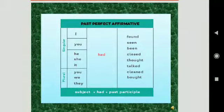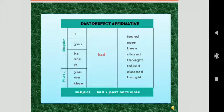How to frame affirmative sentence in past perfect form? Your structure will be subject plus had plus past participle. So how it will be?